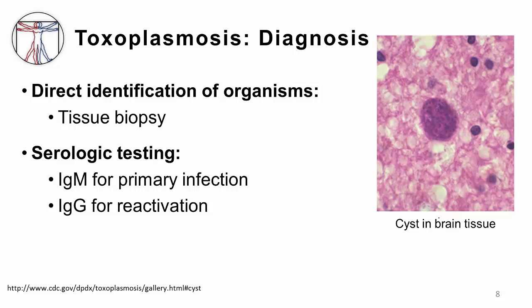The gold standard for diagnosis is biopsy of infected tissue. However, brain biopsy carries considerable risk and is not usually the first choice. In this image, you can see a patient who underwent brain biopsy and a cyst was identified in the brain, confirming the diagnosis.